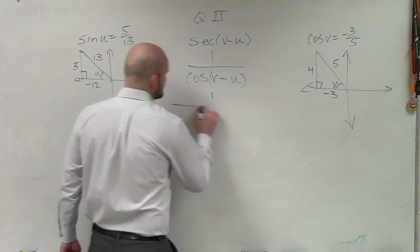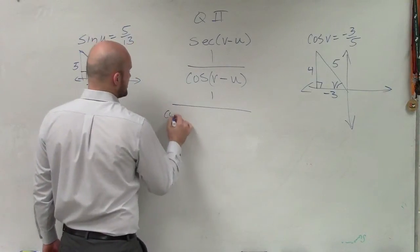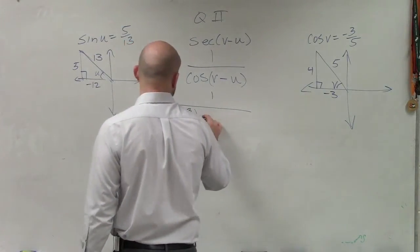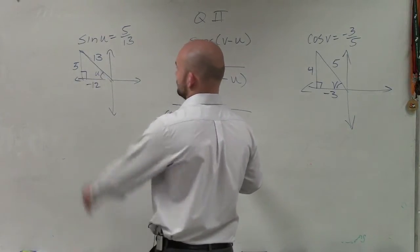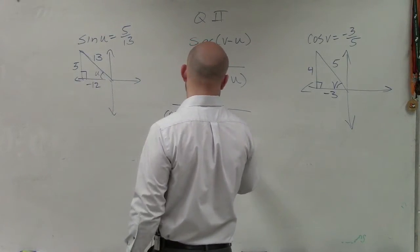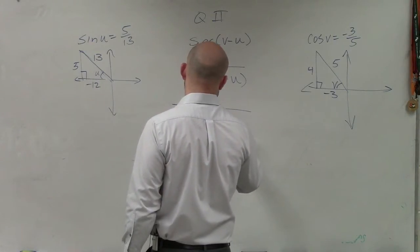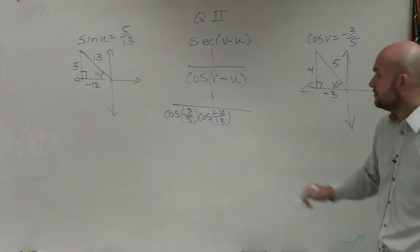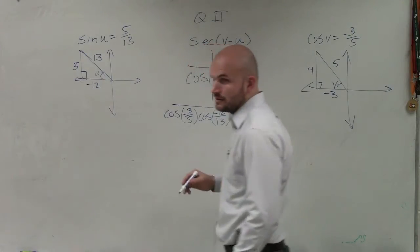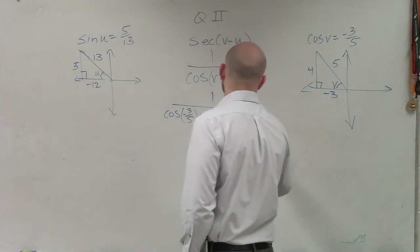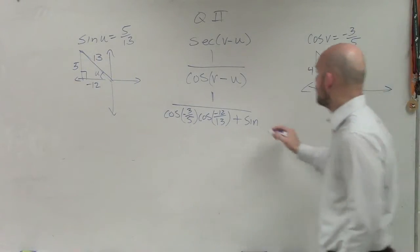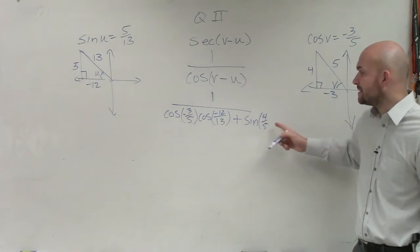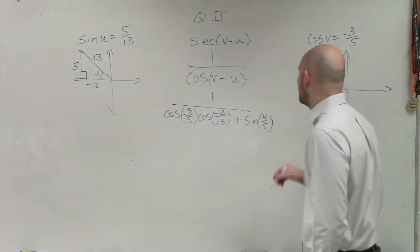We now know that cosine of (v minus u) is going to be cosine of v, which is negative 3 over 5, times the cosine of u, which is negative 12. Then plus the sine of v, which is 4 over 5, times the sine of u, which is 5 over 13. Notice we're still evaluating the trigonometric functions for their different points.